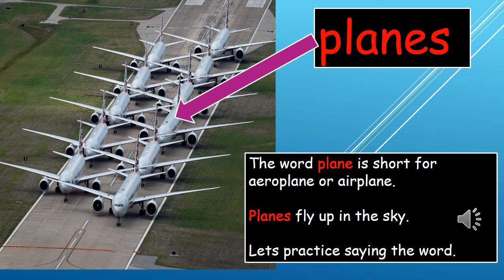The next word we will see in today's sentences is planes. One plane, many planes, as we can see in the picture. The word plane is short for aeroplane or airplane. In our example, planes fly up in the sky. It means the same as aeroplane. Singular is plane; plural, to talk about many, is planes. Let's practice saying it.